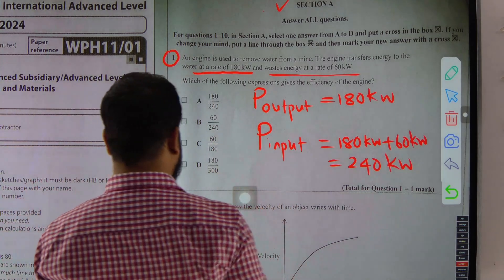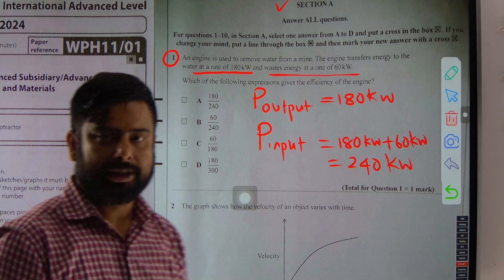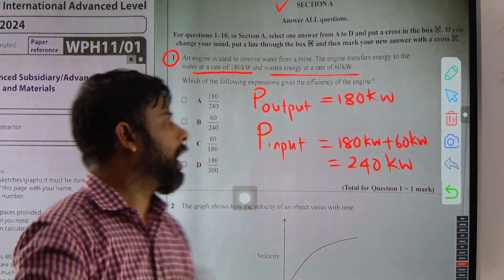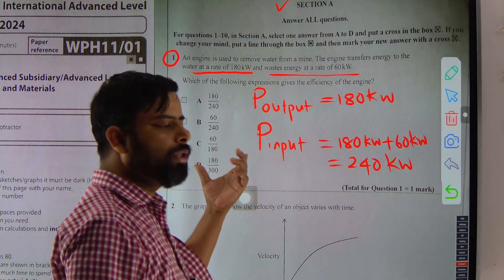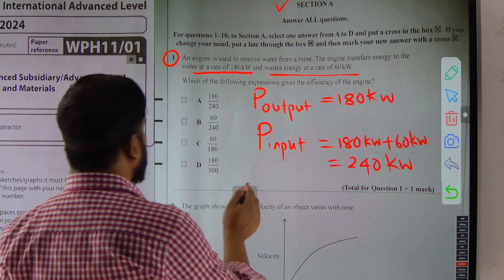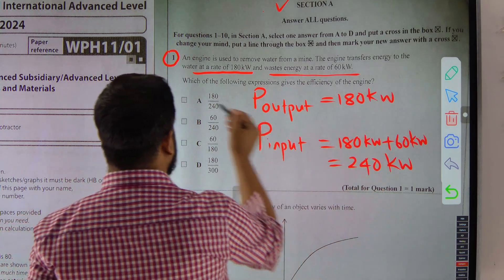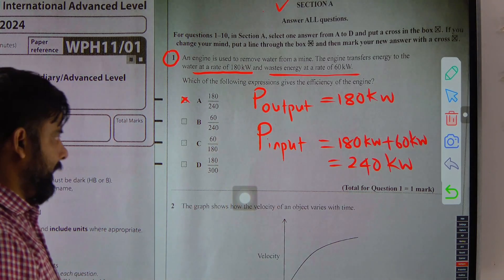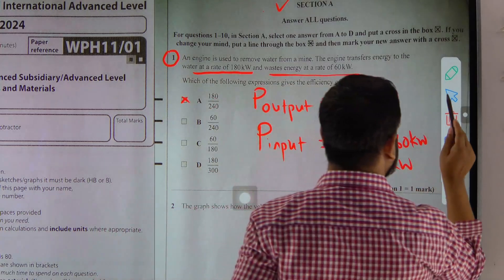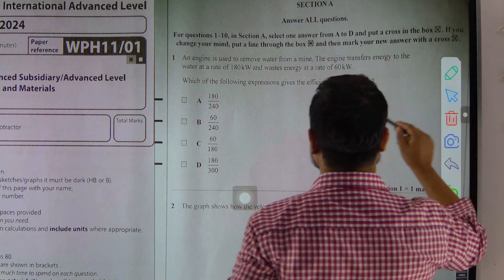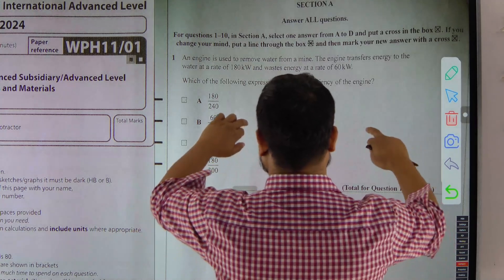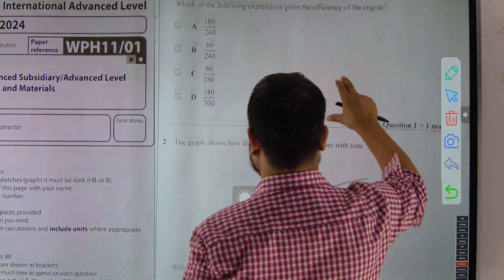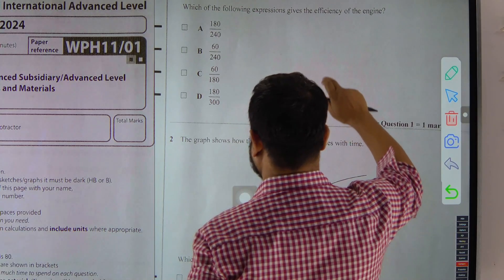So efficiency — the formula for efficiency is the ratio of useful output power divided by total input power. That gives us 180 divided by 240, so the current answer is A.